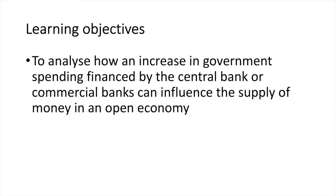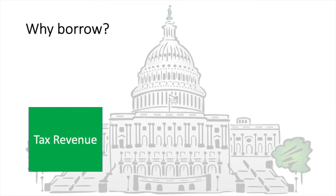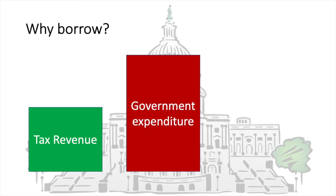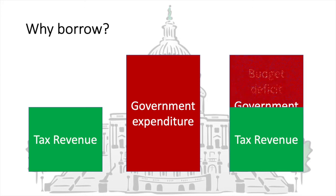In this video we will analyse how an increase in government spending financed by the central bank or commercial banks can influence the supply of money in an open economy. The first issue to consider is why the government will borrow money in the first place. If their tax revenue is less than the level of government expenditure for the year, they will be running a budget deficit. A budget deficit can be financed through borrowing.